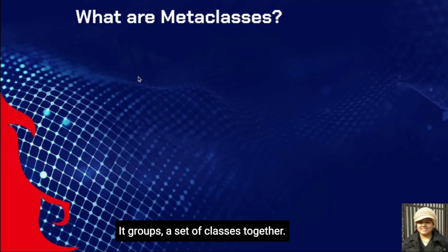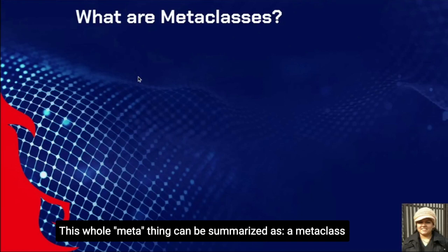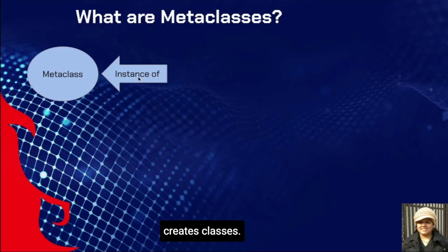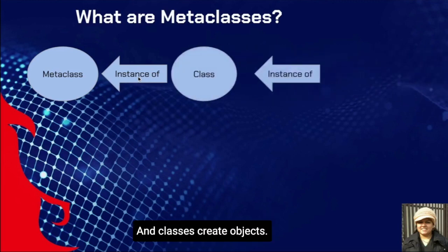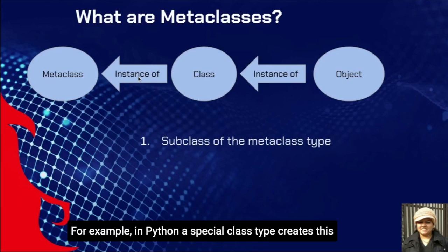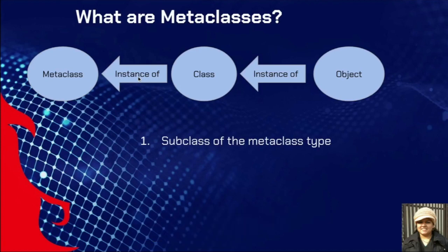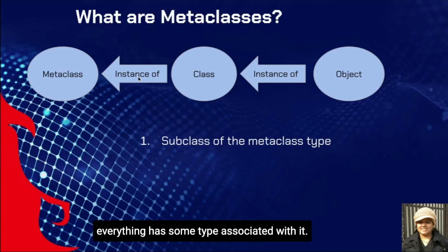That particular thing used to instantiate a class is called a metaclass. It groups a set of classes together. We can have meta information about classes within a metaclass. This whole meta thing can be summarized as: metaclass creates classes, and classes create objects. For example, in Python, a special class called type creates class objects. The type class is the default metaclass responsible for making classes.